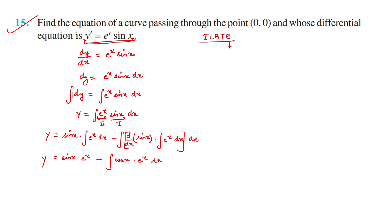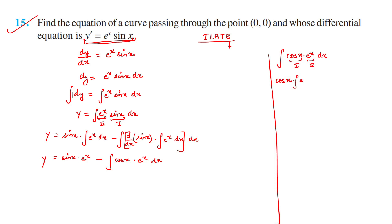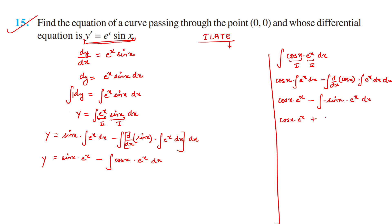Now we need to integrate cos x · e^x again using integration by parts. Taking cos x as first function and e^x as second: cos x · e^x − ∫[d/dx(cos x) · e^x] dx. The derivative of cos x is −sin x, so this becomes cos x · e^x − (−sin x) · e^x dx, which simplifies to cos x · e^x + ∫sin x · e^x dx.